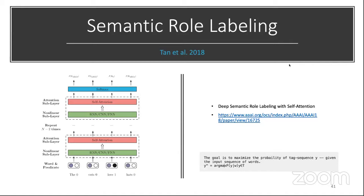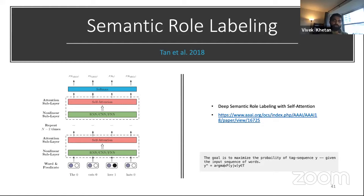A YouTube question asked: can you use techniques like BERT to enhance this? Yes — the QA-SRL model and the semantic role labeling model both use language models as a layer. Most modern NLP techniques use language models, and this model is currently the best performing as a result.